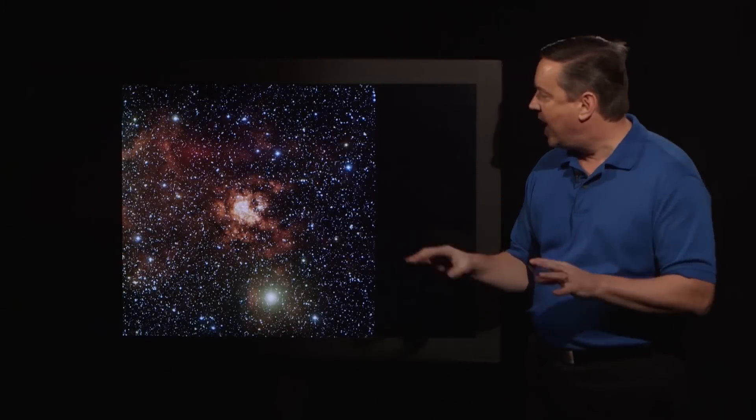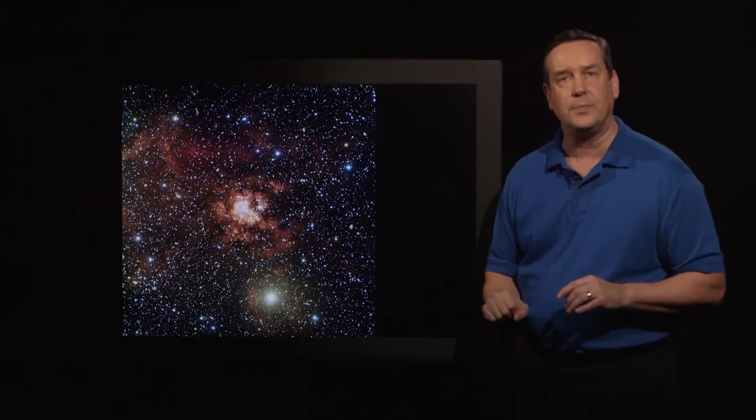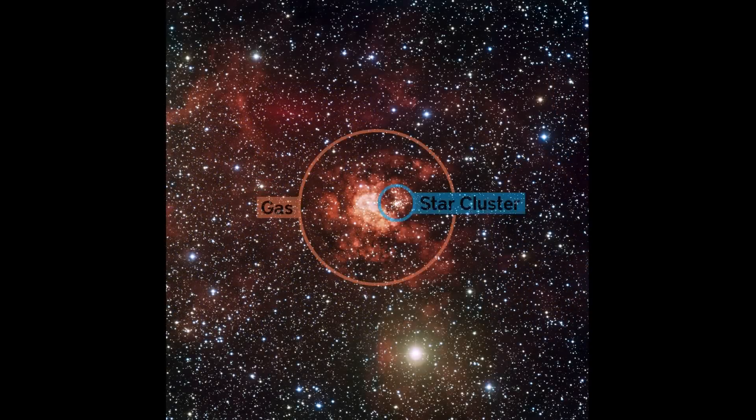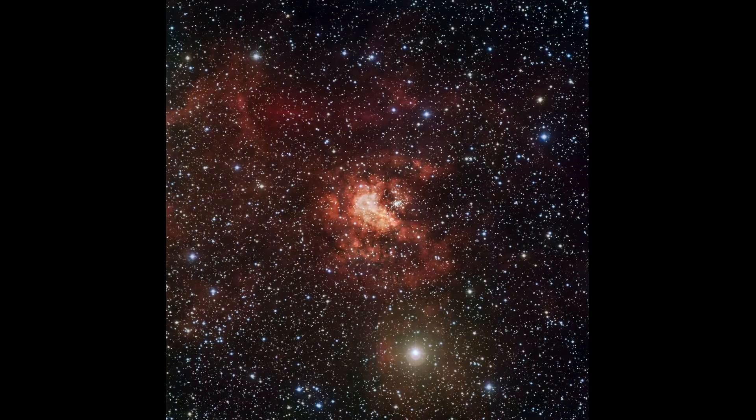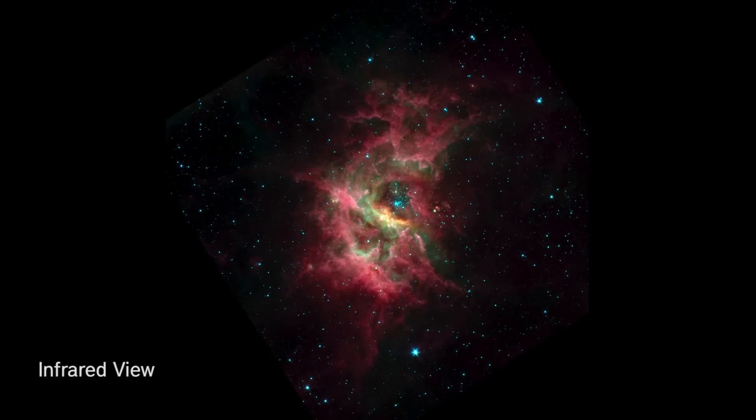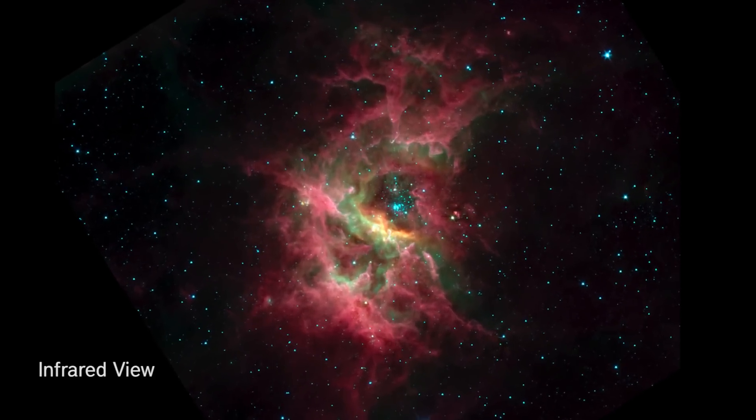This is a ground-based image of the nebula GUM-29, and you can see it consists of a star cluster and its associated gas. The ultraviolet light from the stars is heating the gas and causing it to glow. However, if we look in infrared light, this is an image from the Spitzer Space Telescope, we can see that the gas is actually warmed over a much larger region than we see in visible light.